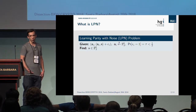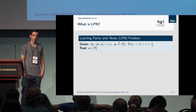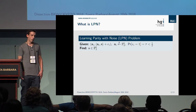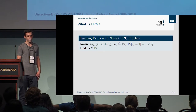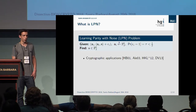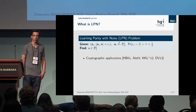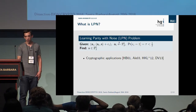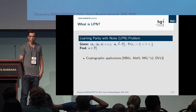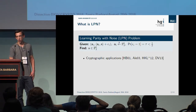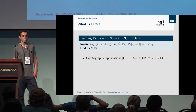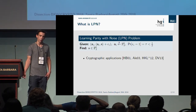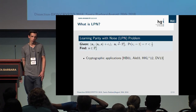Why is this problem important? The common hardness assumption is that this problem is not solvable in polynomial time for an error rate that is high enough, and so it forms the basis of many cryptographic applications. For example, there are authentication schemes as well as encryption schemes based on the hardness of the LPN problem. We need to understand how hard this problem actually is, in order to determine proper parameters for these schemes to ensure certain security levels.